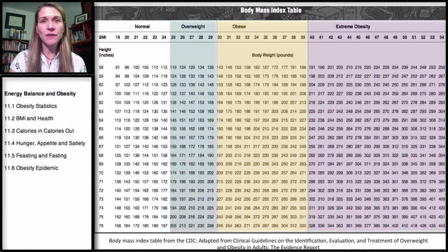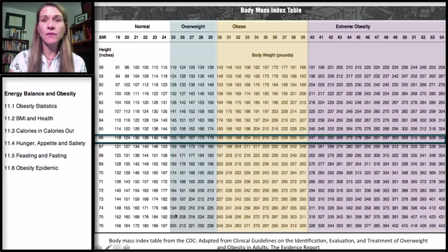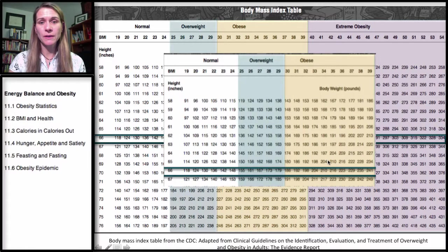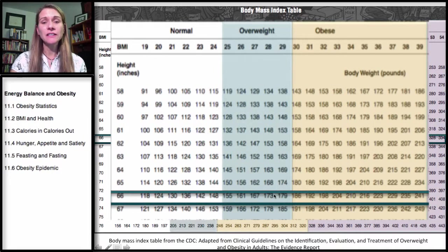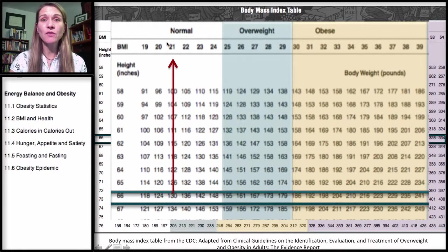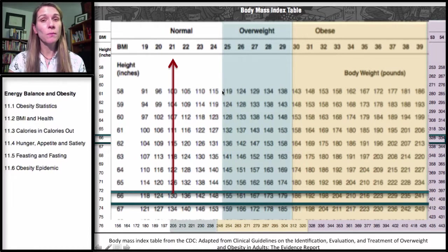So how would we go about doing this? Let's take someone who is 5'6", so that would be 66 inches. We look at 66 inches, and let's say this individual is about 130 pounds. At 5'6" and 130 pounds, that would give a BMI of 21. The normal range is 19 to 24, so this individual would have a normal Body Mass Index and be considered a healthy weight based on this chart.